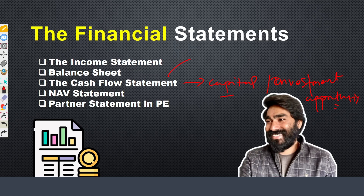When data is processed — for example, a buy trade — the system categorizes it as an investment asset and automatically creates a journal entry, updating the trial balance and the balance sheet asset side. Your job is to generate the statement and cross-verify: quantity times price equals the posted balance. This is how transaction-to-reporting works.